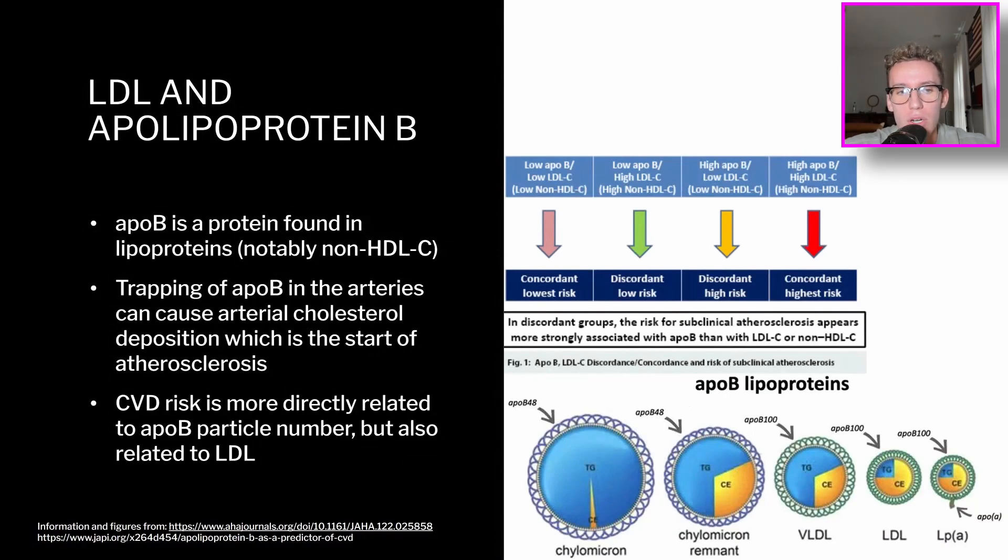So as you may be able to imagine, cardiovascular disease is related to the apoB particle number and also the LDL particles. That's basically because when you have higher levels of them, there's a higher chance that one of them gets lodged in your arteries and begins to develop atherosclerosis. If you take a look at the chart a little bit higher, you can see that people with the highest apoB and highest LDL cholesterol have the concordant highest risk of cardiovascular disease. I do want to mention that dietary cholesterol intake is not associated with the amount of LDL or apoB proteins found in your blood, which we'll talk about a little bit on the next slide.